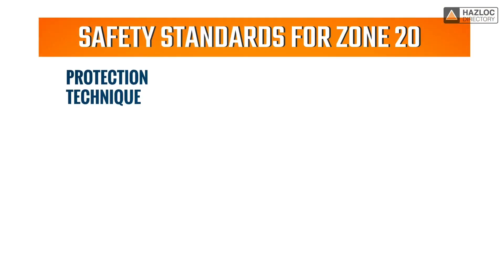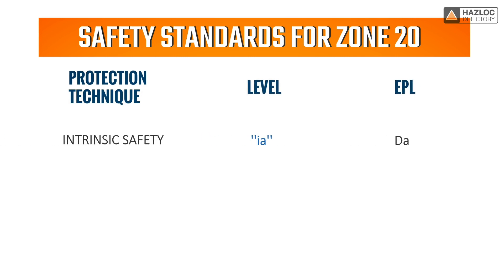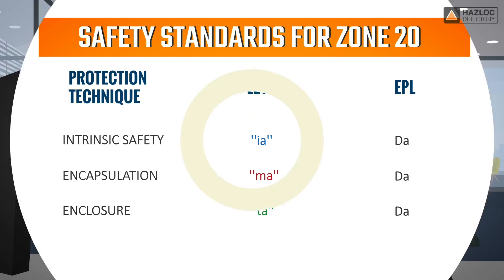an electrical device must be protected by one or more of the following protection techniques: intrinsic safety with the level of protection IA, encapsulation with MA protection, and protection by enclosure with TA marking.